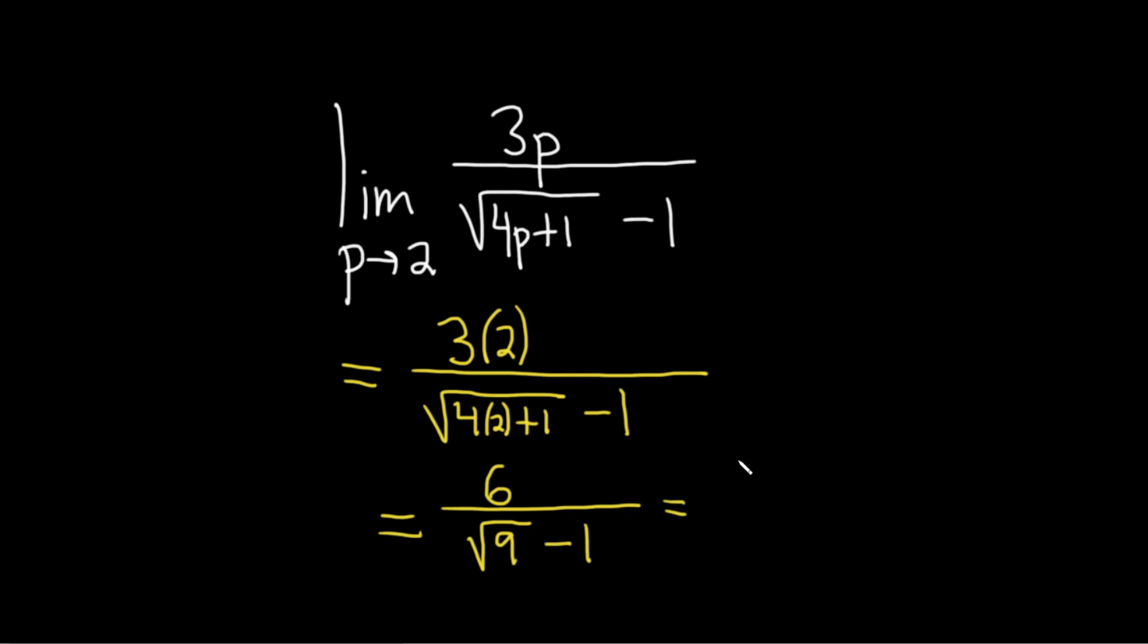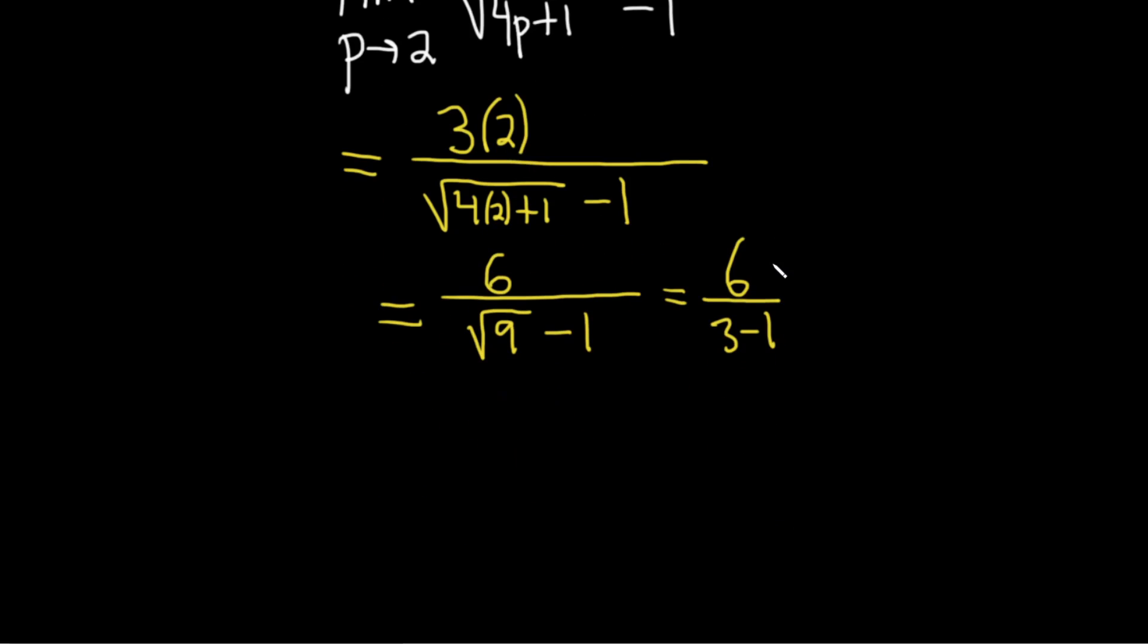So this is 6 over, the square root of 9 is 3. So we get 3 minus 1. That's going to be 6 over 2 which is equal to 3. So we got an answer, so we're done.